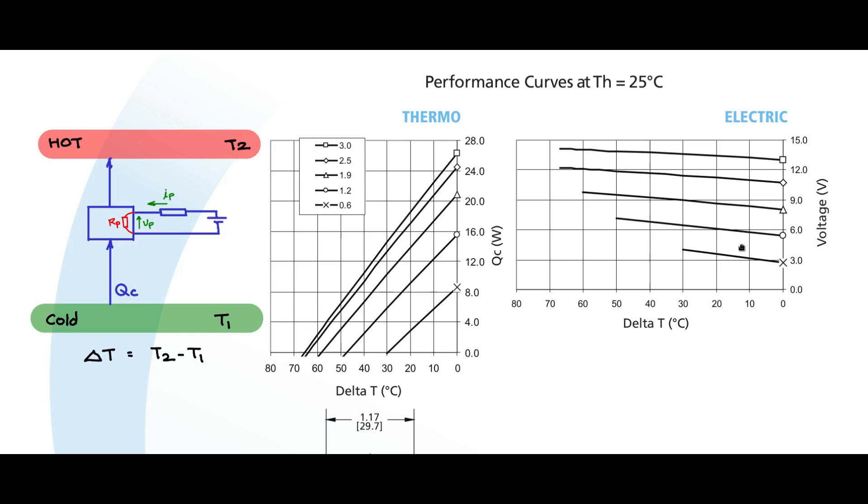Likewise, even in the electric nomograph, this graph is at 0.6 amps, this is at 1.2 amps, 1.9 amps, 2.5 amps and 3 amps. Observe here that greater delta T is achievable as the amps that flow into the Peltier junction increases. You can achieve as much as close to 65, 68 degrees centigrade when the amps flowing into the Peltier is at around 3 amps.